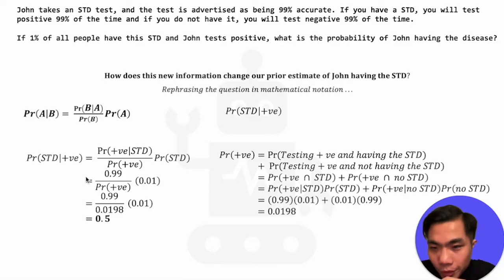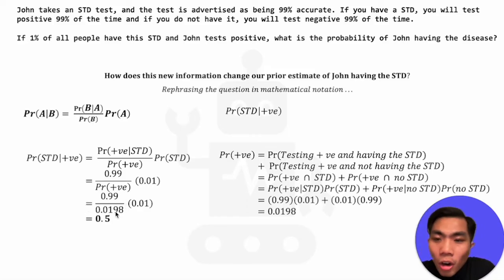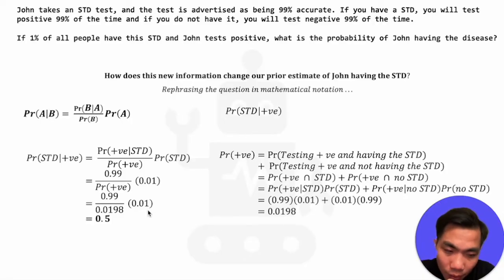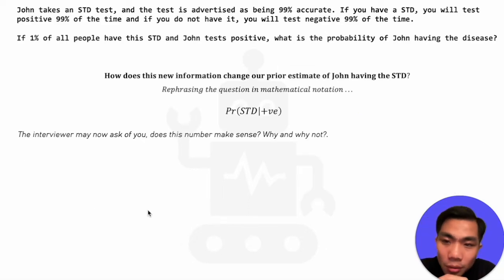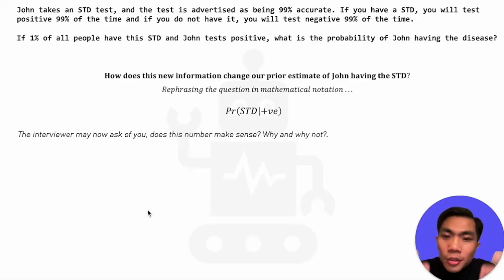So our posterior is 50%. The new information, represented by the fraction in Bayes' theorem, has scaled our prior from 1% up to 50%. However, at this point your interviewer might ask: does this number make sense? Does 50% make sense? Why or why not? This is where it's important to understand the intuition behind what Bayes' theorem is trying to do.